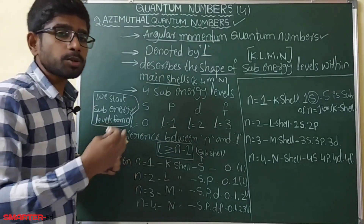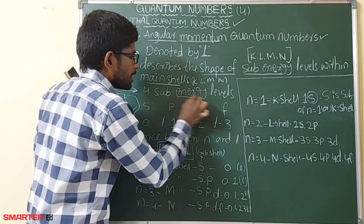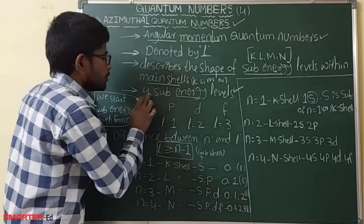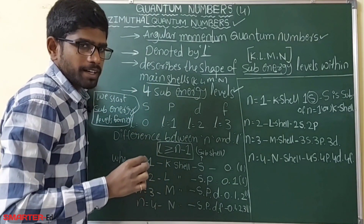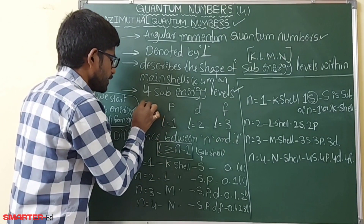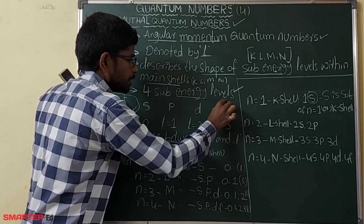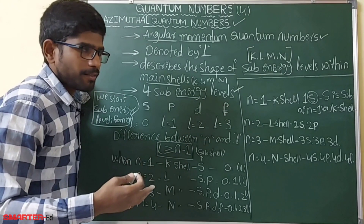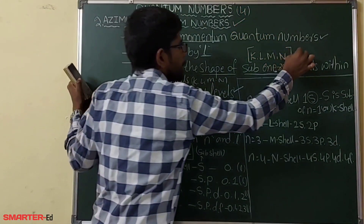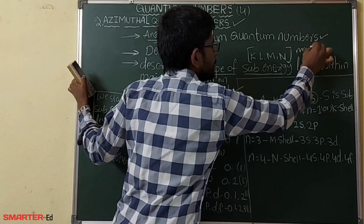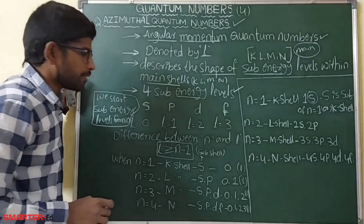There are four sub-energy levels: s, p, d, and f. The main energy levels are K, L, M, N — these are the main shells. And s, p, d, f are the sub-energy levels within them.